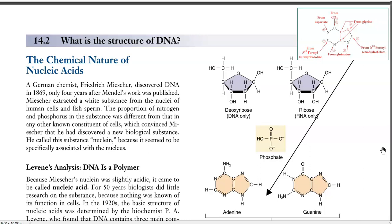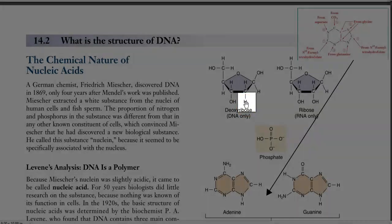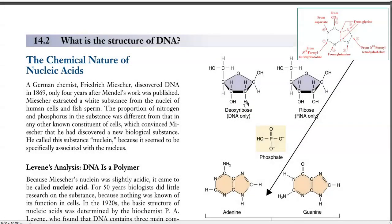In DNA, it is deoxyribose sugar that is present, whereas in RNA it is a ribose sugar. The difference between the deoxyribose and ribose sugar is the absence of an oxygen at this position. That is the reason the sugar present in DNA is referred to as a deoxyribose sugar.